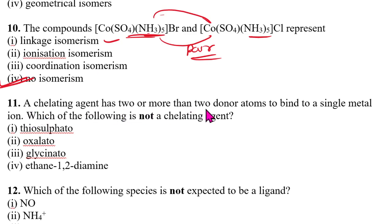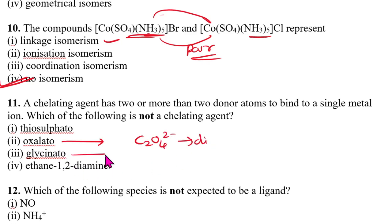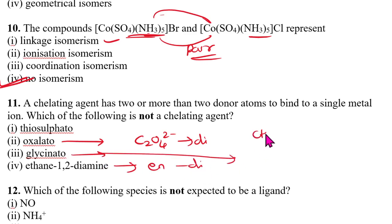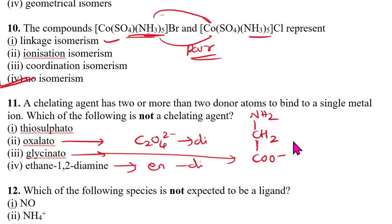Eleventh question: a chelating ligand has two or more donor atoms to bind a single metal. Which of the following is NOT a chelating ligand? Oxalate (C₂O₄²⁻) is didentate. Glycinato and ethane-1,2-diamine (en) are also didentate chelating ligands. However, thiocyanate (SCN⁻) is a monodentate ligand. Hence the answer is option 1 — thiocyanate is not a chelating ligand.